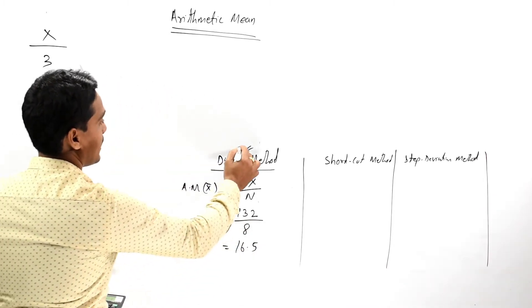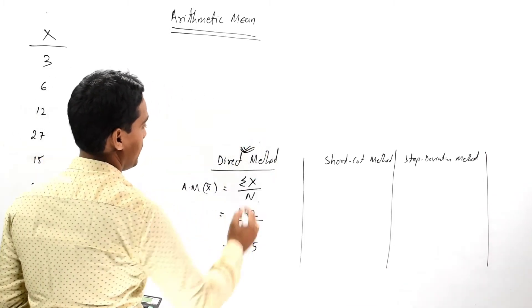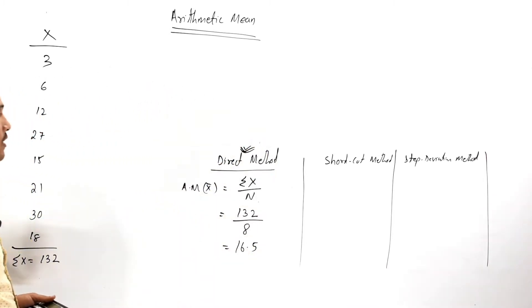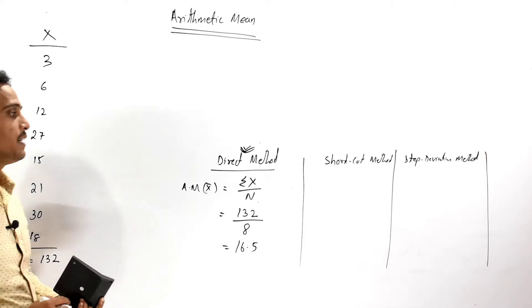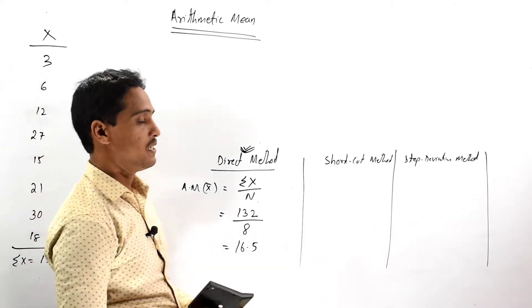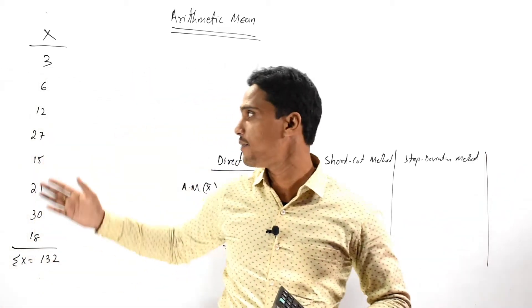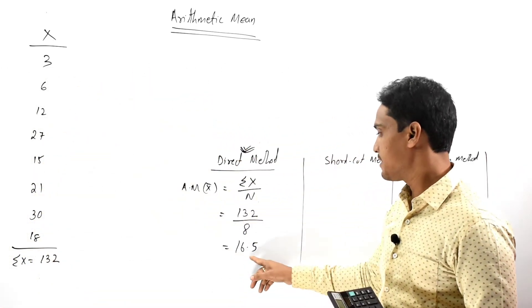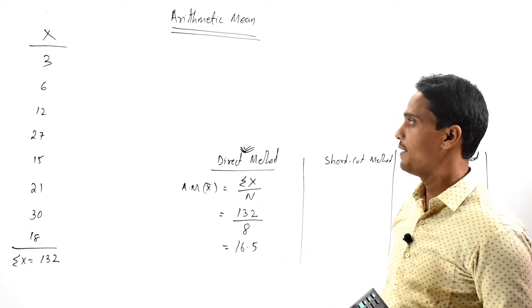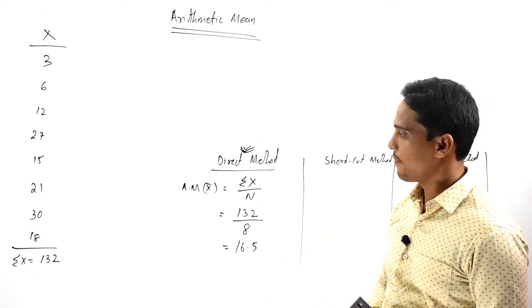So our arithmetic mean equals 132 divided by 8, which equals 16.5. The arithmetic mean under the direct method of the given individual series is 16.5.